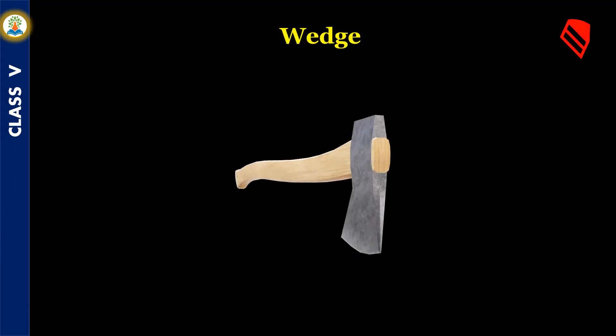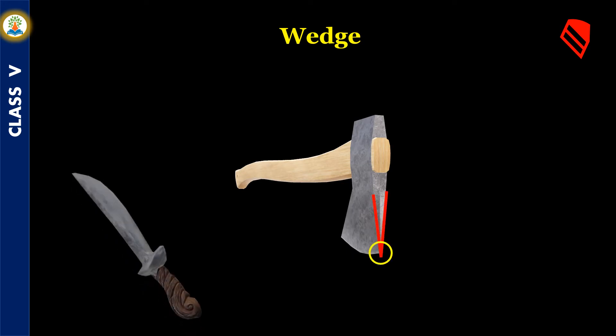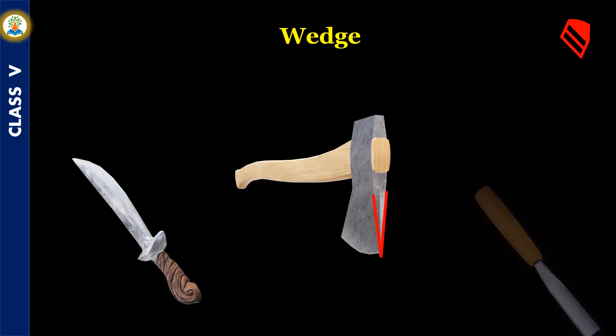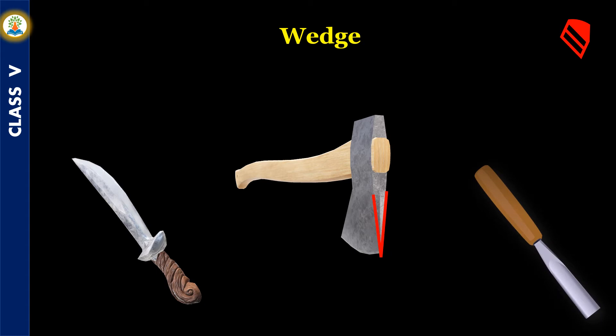When two inclined planes meet at a pointed end, a wedge is formed. Wedges are often used in devices that split open an object. A knife, an axe, and a chisel are examples of wedges.